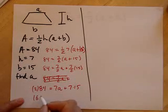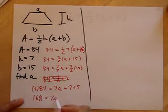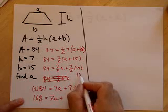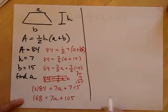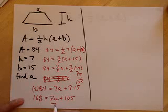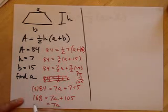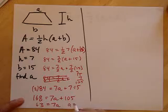And I get 168 equals 7a plus, what's 7 times 15? 105. I subtract 105 from both sides, I get 7a equals 63. Therefore, a is equal to 9.